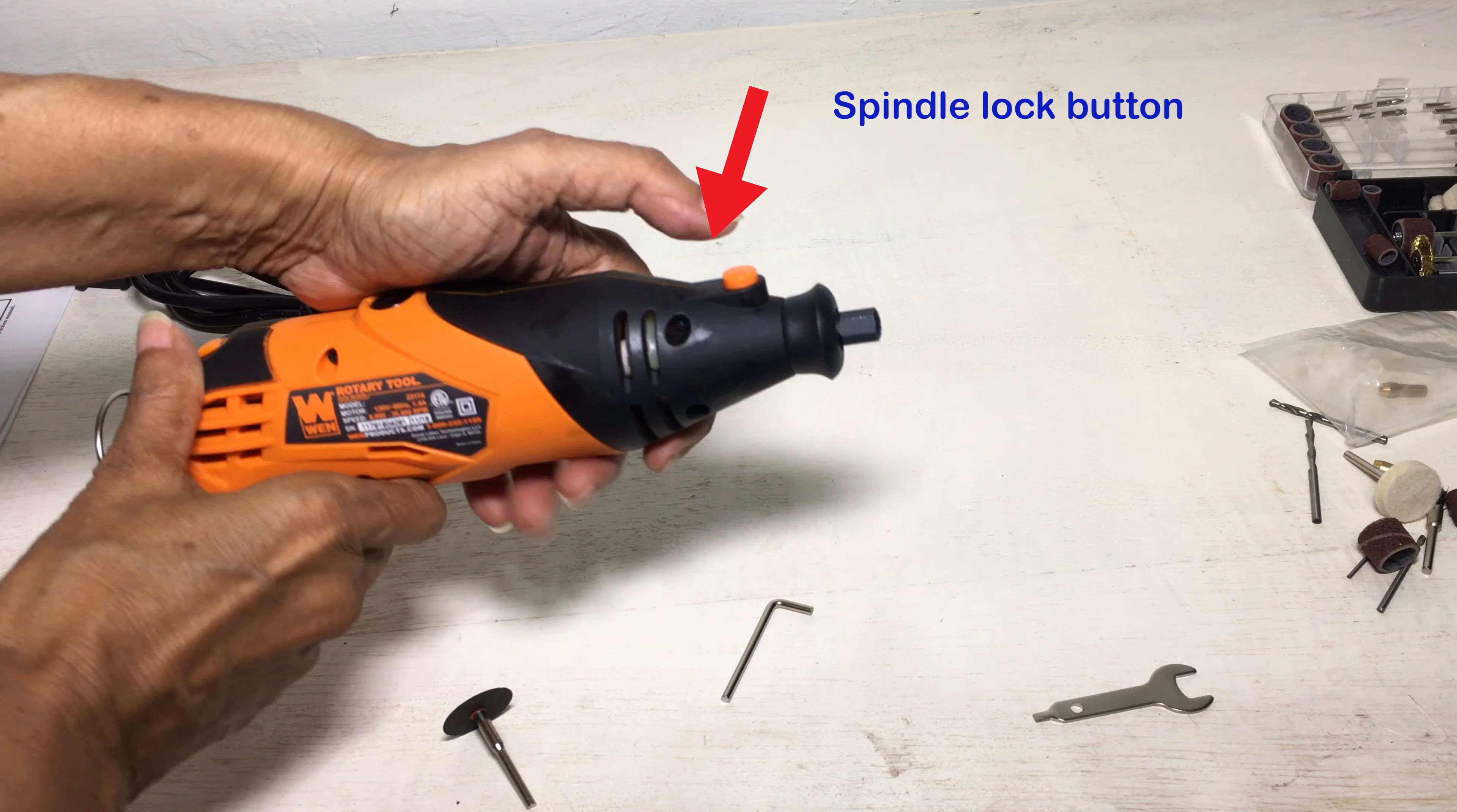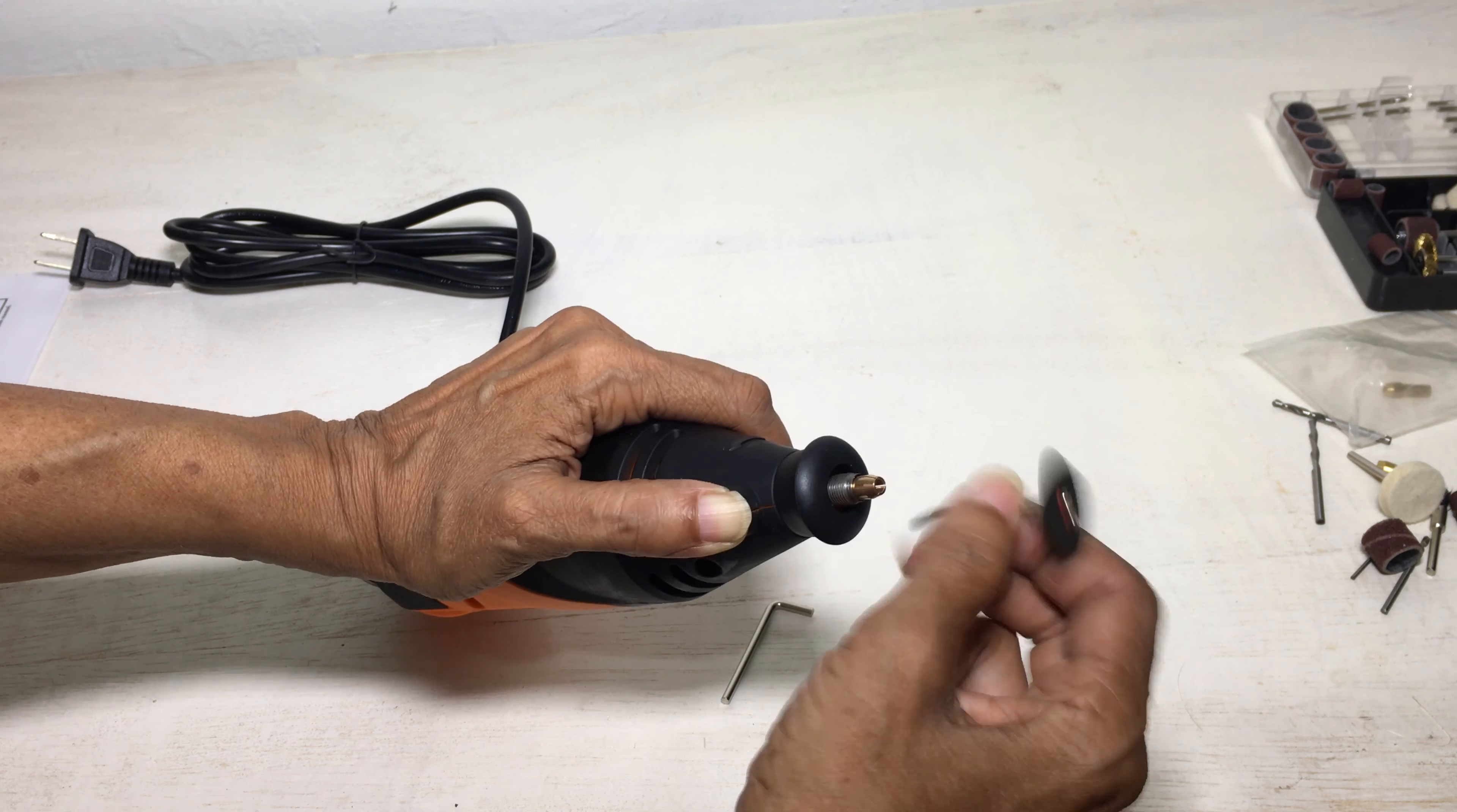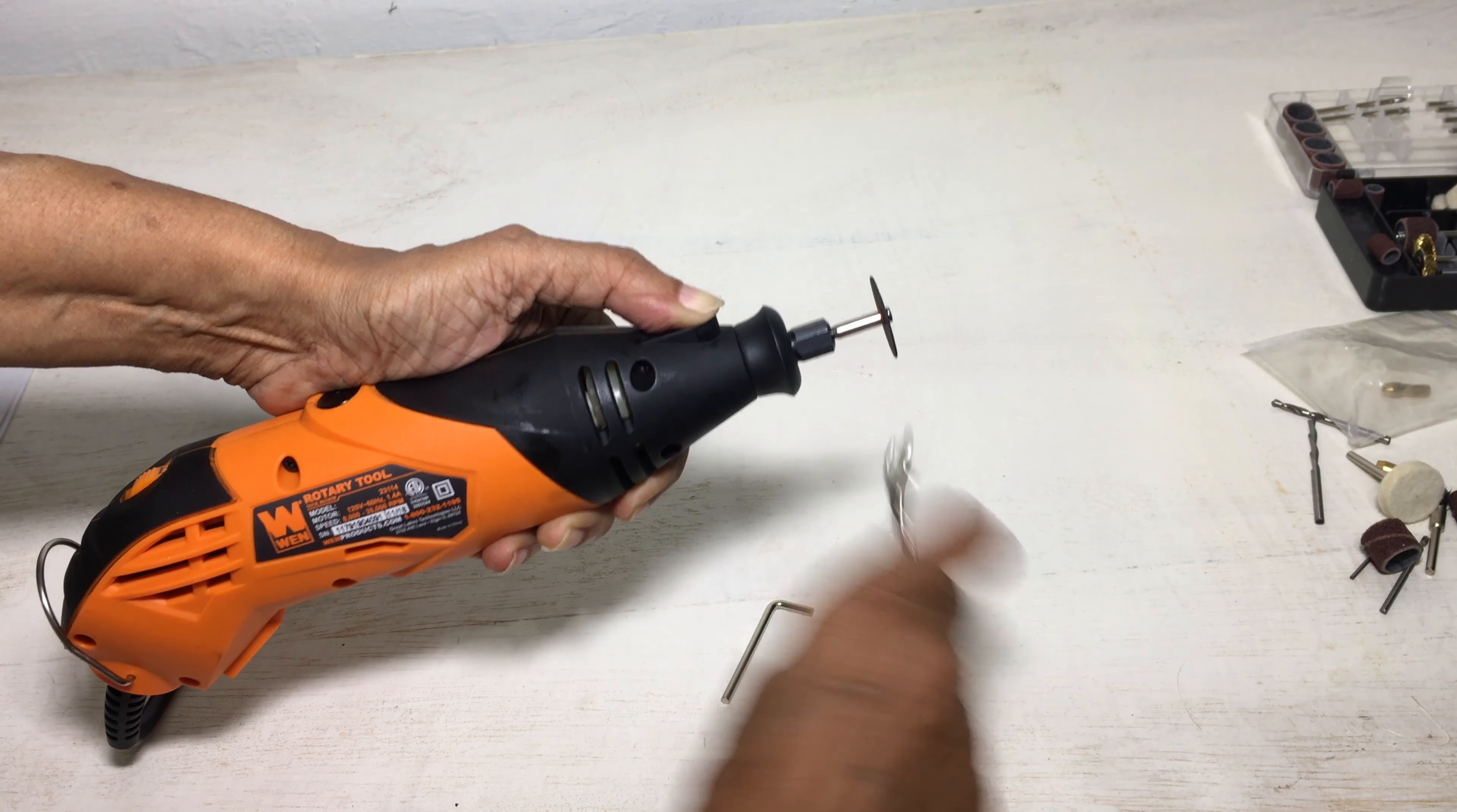To insert any bit into the tool, first press and hold the spindle lock button whilst using the wrench to slacken the collet nut. Check that the collet being used is the correct size to accommodate the shank of the bit. Once you have the correct collet in place, screw back on the collet nut, insert the bit into the collet, press and hold the spindle lock button whilst using the wrench to tighten the collet nut.